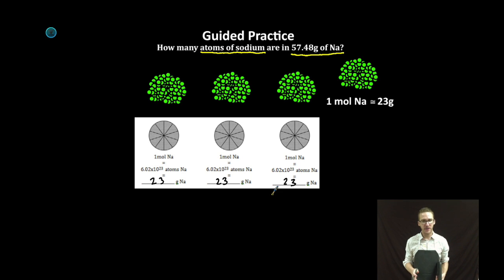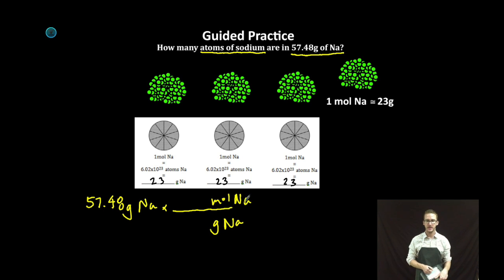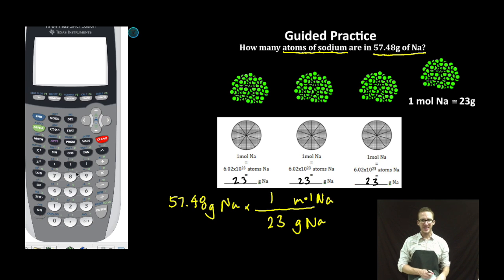Now some of you have pretty good math skills and you might be able to figure this out without me working through the dimensional analysis but that's where I'm going to go next because it really helps me. I'm starting with my 57.48 grams of sodium. I'm going to multiply that by a conversion factor. This time I'm going to put grams of sodium on the bottom and moles of sodium on the top. Now one mole of sodium is about 23 grams. Periodic table. I bust out my calculator.